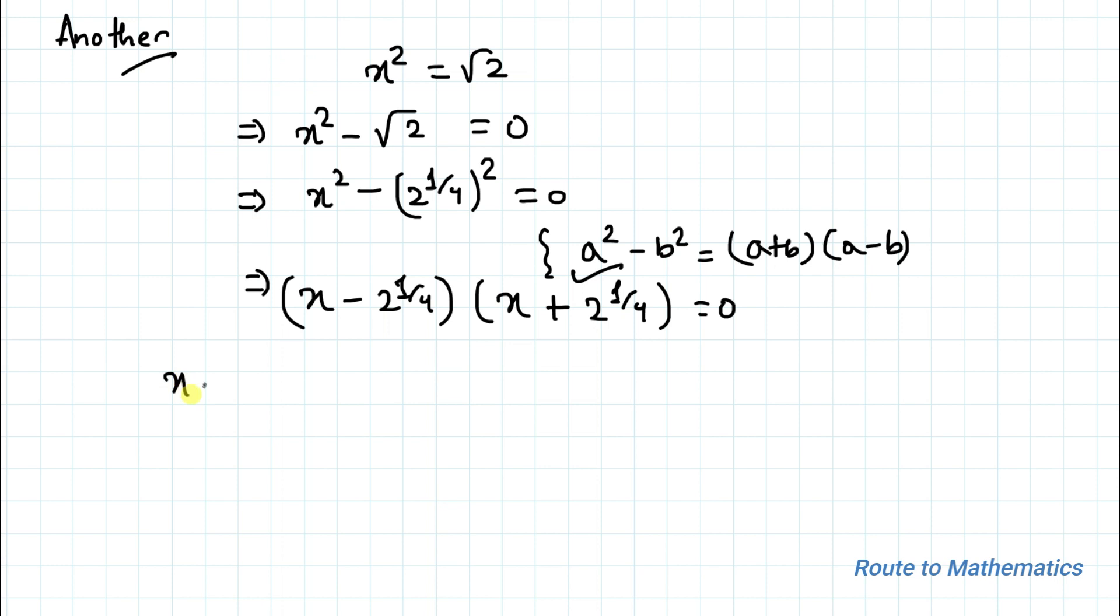From here we can write x minus 2 to the power 1 by 4 equals 0 and x plus 2 to the power 1 by 4 equals 0. This implies we have x equals minus 2 to the power 1 by 4 and x equals 2 to the power 1 by 4 as our answer. From both approaches we are getting the same answer.